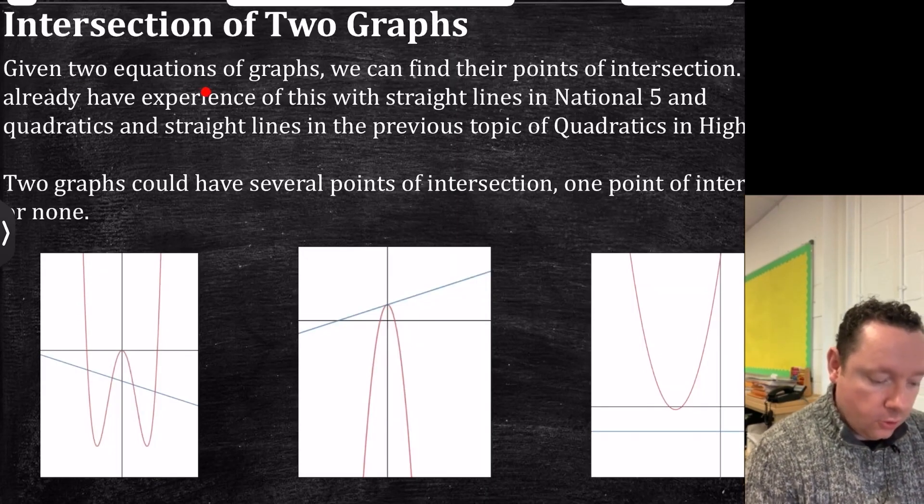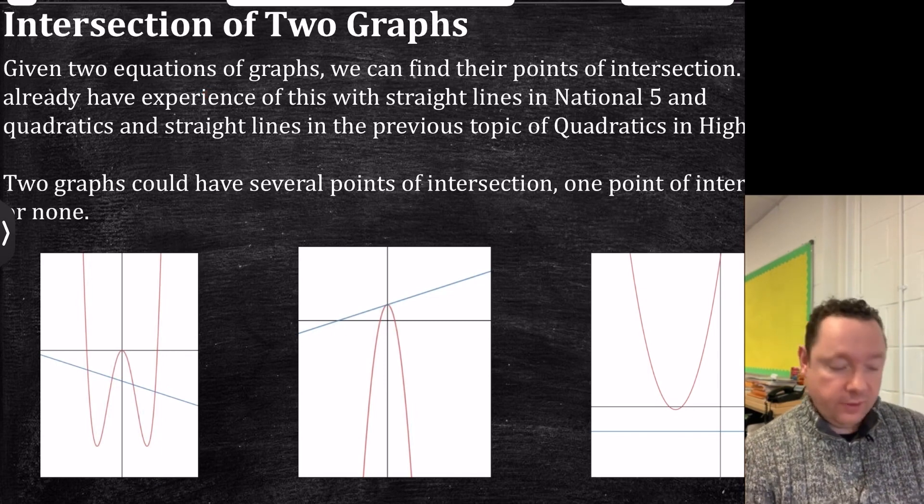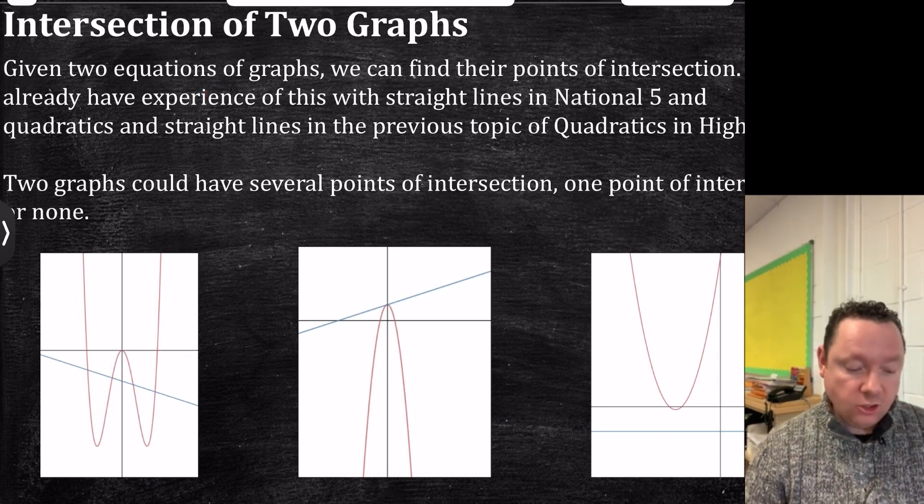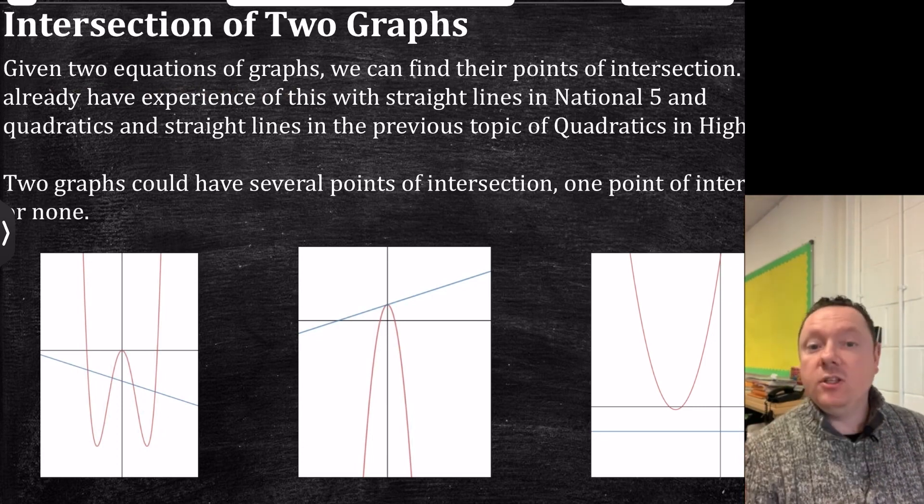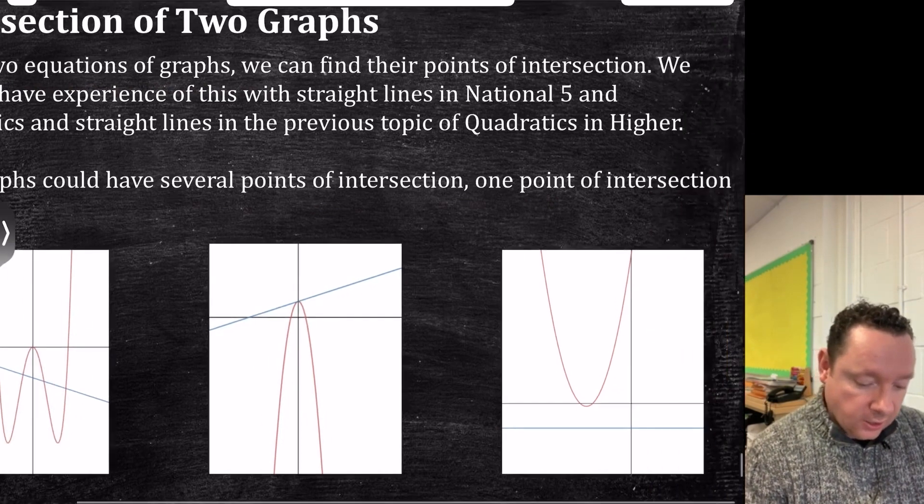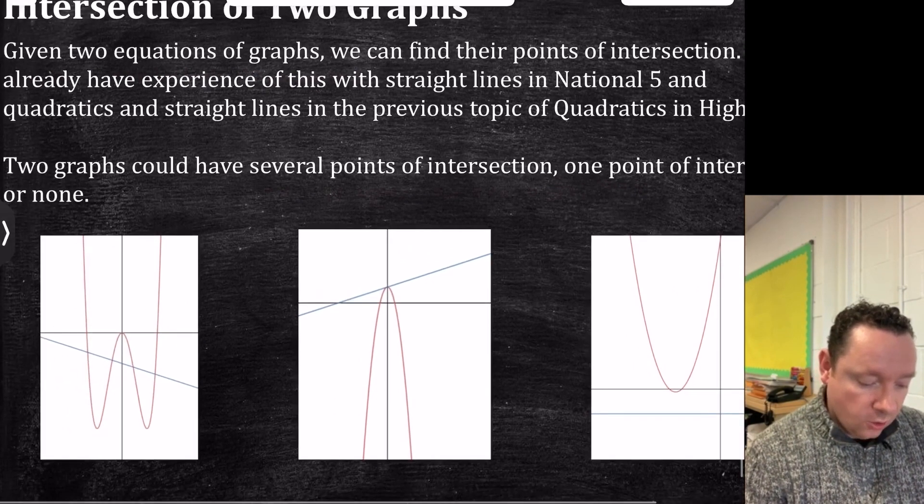So if we have got two equations of graphs, we can find the point of intersection. We've already done this in straight lines in National 5 and quadratics in straight lines in the previous topic of quadratics in higher. But two graphs can have several points of intersection, one point of intersection, or none.